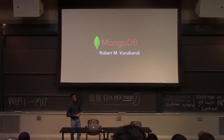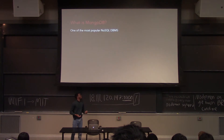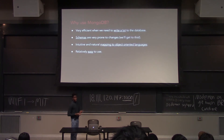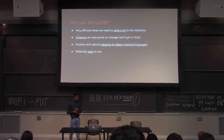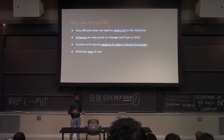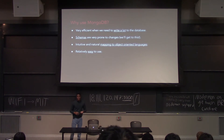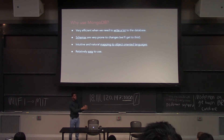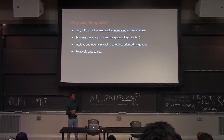Now we're going to learn about MongoDB. MongoDB is one of the most popular NoSQL databases — remember, NoSQL is like this hybrid model. MongoDB is very efficient when you want to do a lot of writes into your database. Schemas are very prone to change. For those familiar with object-oriented languages like Java or JavaScript, MongoDB has a very natural and intuitive mapping, making it easy to store data used in those languages. MongoDB is also extremely easy to use.